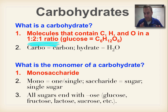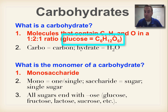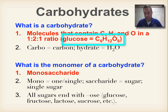We have a type of sugar called glucose. All sugars end with the suffix O-S-E, which stands for sugar. Glucose is the type of sugar that your cells use to get energy. It has a chemical formula of C6H12O6 — a one to two to one ratio.